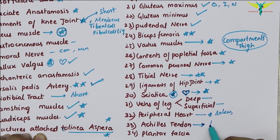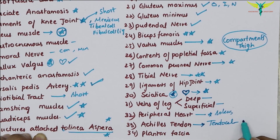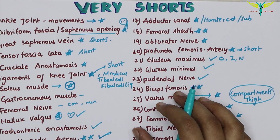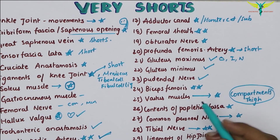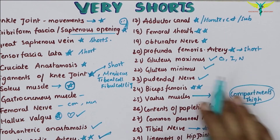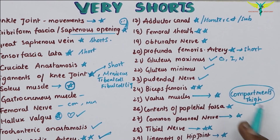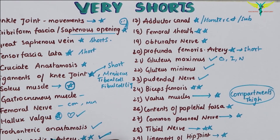The Achilles tendon — another name for the tendo calcaneus — is the strongest tendon of the body. The plantar fascia is also important. A compilation video on very short questions for different topics like upper limb, thorax, abdomen, lower limb, and head and neck may be made in upcoming videos — let me know in the comments below.